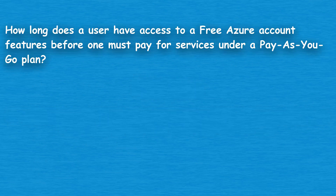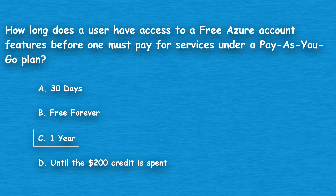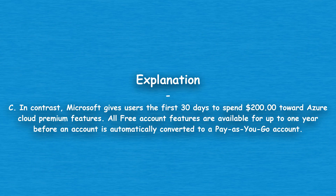The next question: how long does a user have access to free Azure account features before one must pay for services under a pay-as-you-go plan? Option A: 30 days. Option B: Free forever. Option C: One year. Option D: Until the $200 credit is spent. The correct answer is Option C, One year. Microsoft gives users the first 30 days to spend $200 toward Azure Cloud Premium features. All free account features are available for up to one year before an account is automatically converted to a pay-as-you-go account.